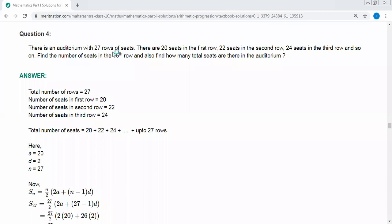There is an auditorium with 27 rows of seats. There are 20 seats in the first row, 22 seats in the second row, 24 seats in the third row and so on. Find the number of seats in the fifth row and also find how many total seats are there in the auditorium. This is an arithmetic progression problem.